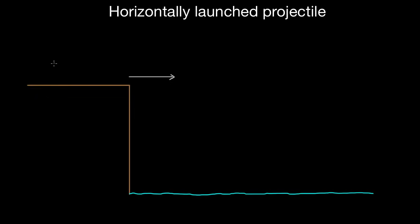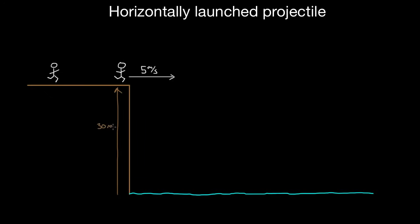A more exciting example — let's say a person is going to cliff dive or base jump. They're going to run, but they don't jump off the cliff. They just run straight off of the cliff. Let's say they run off of this cliff with five meters per second of initial velocity straight off the cliff. And let's say this cliff is 30 meters tall — that's over 90 feet.